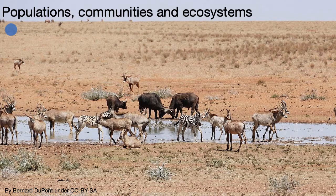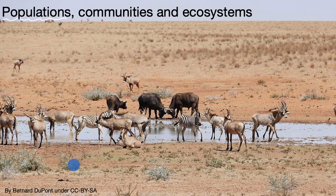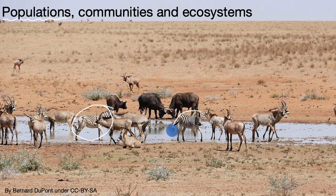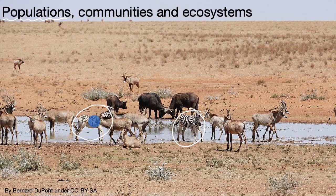First of all, a population is talking about the members of a specific species in an area. So for example, in this picture we have a population of zebra. I have one zebra there, one zebra there. There might be some others that we can't see — in fact, there are likely to be. So these are each members of a population of zebra.